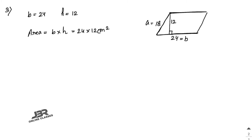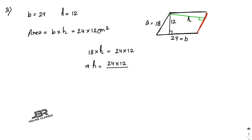Now consider the shorter side, 18, as the base. Then 18 into h equals the same area, which is 24 into 12. So h equals 24 into 12 divided by 18. Simplifying: 288 divided by 18 gives 16. So 16 centimeters is the perpendicular distance between the shorter sides.